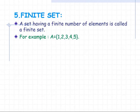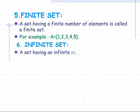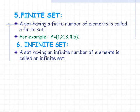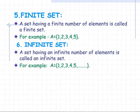For example, A = {1, 2, 3, 4, 5}, where the number of elements is finite, so set A is called a finite set. Infinite set: a set having an infinite number of elements is called an infinite set. For example, A = {1, 2, 3, 4, 5, ...} where the dots represent an infinite number of elements.